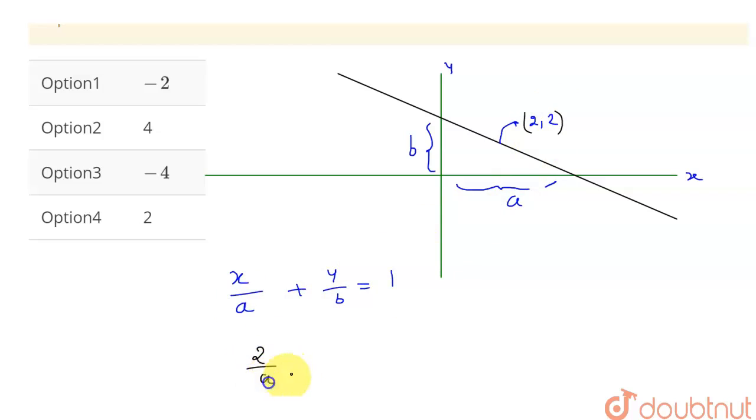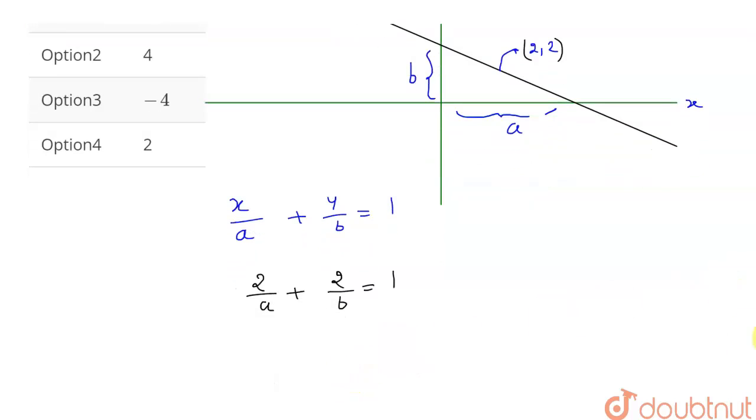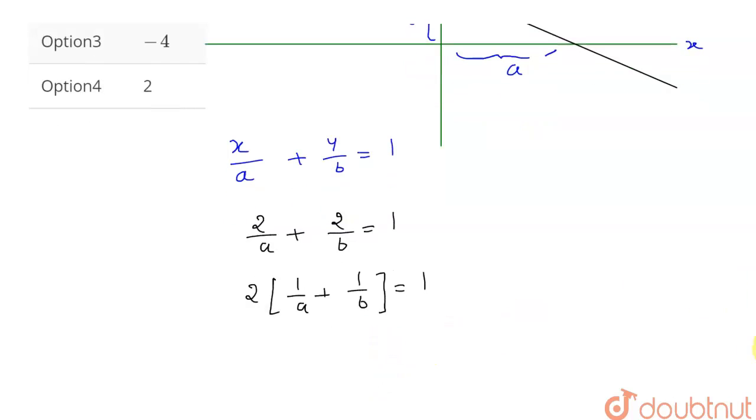So, x is equal to 2 here. So, 2 upon a plus 2 upon b will be equal to 1. From here, I can write 2 times this: 1 upon a plus 1 upon b will be equal to 1.